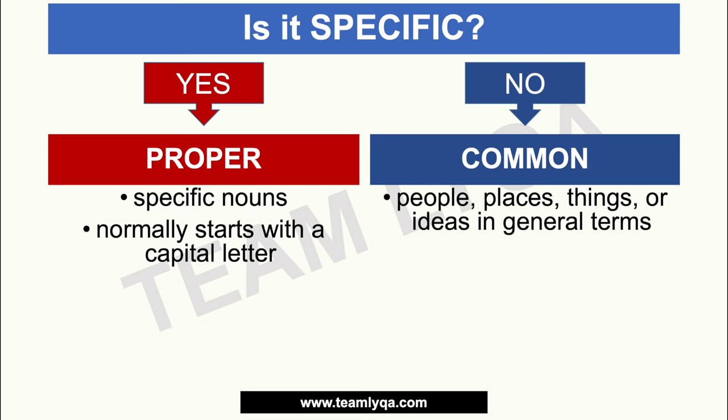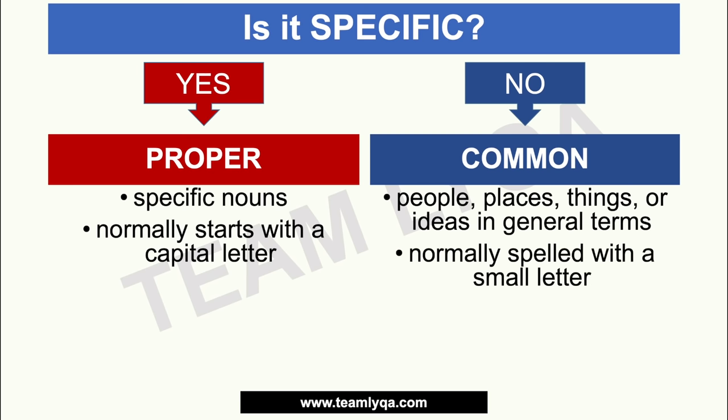Common nouns are people, places, things, or ideas in general terms. Like we said, 'boys' — many possible people could fit that criteria. It's not a specific boy or specific person. Common nouns are normally spelled with a small letter, unlike proper nouns that start with a capital letter.